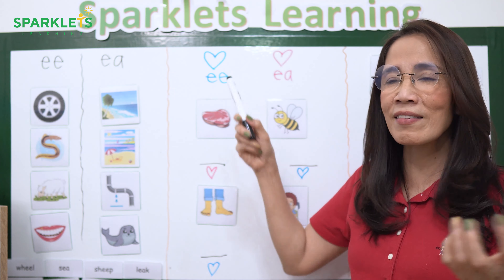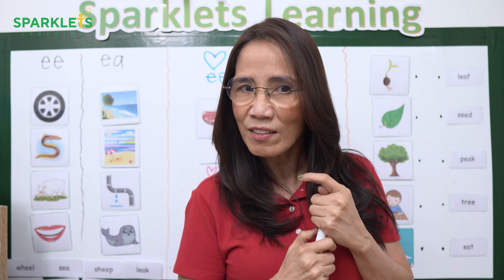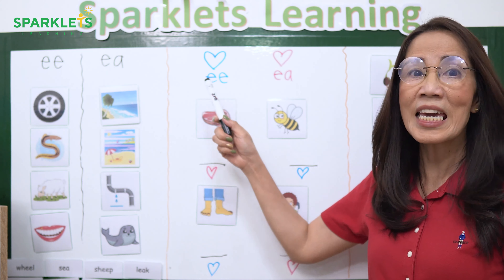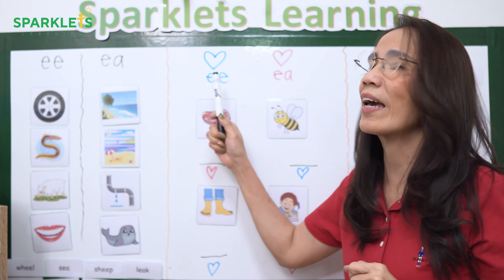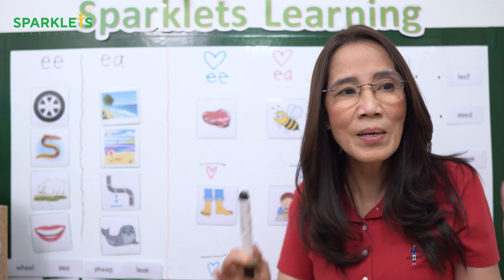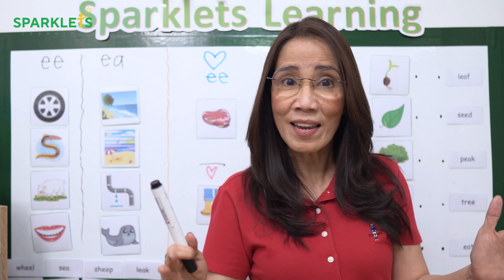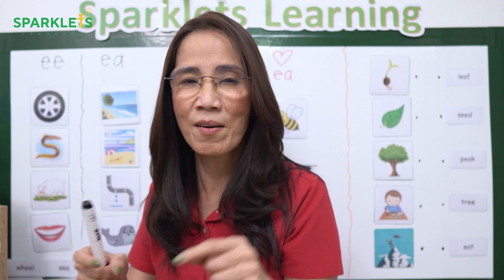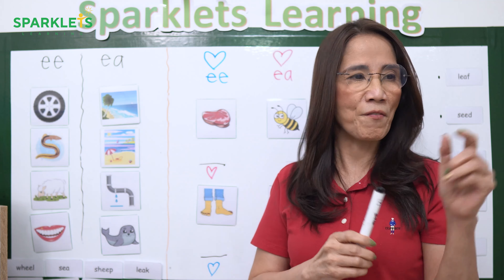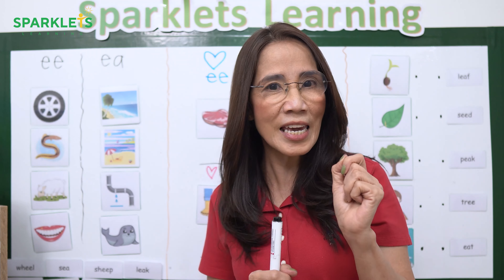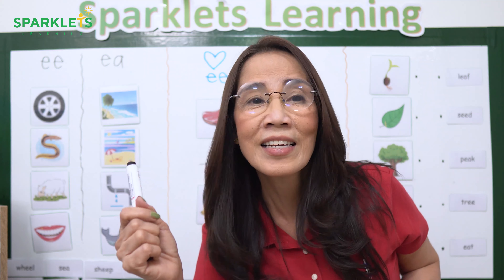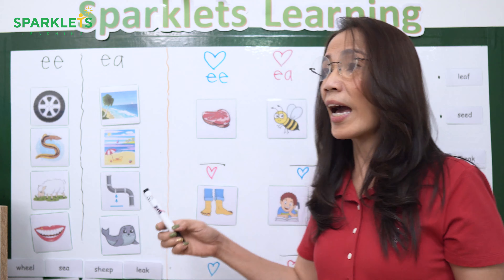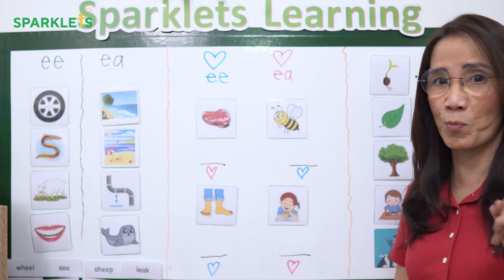So you are going to ask them: EE is what color? Red heart? No — EE is blue heart. Again, EE is blue heart. EA is red heart. What is EA? Red heart. What is EE? Blue heart. If I see a blue heart, it is EE. If I see a red heart, it is EA. Do that again and again until they remember. Then you can move on to spelling.